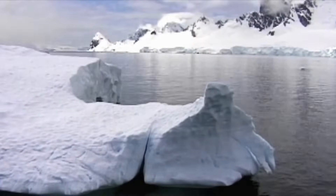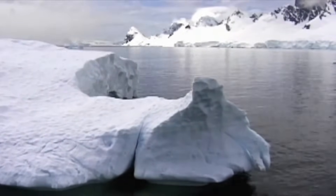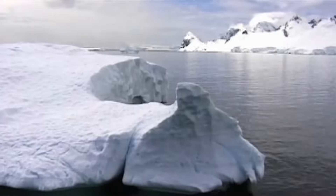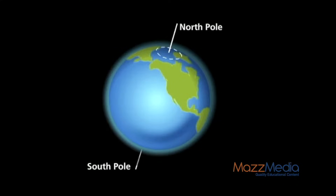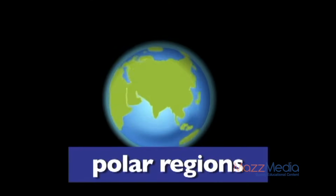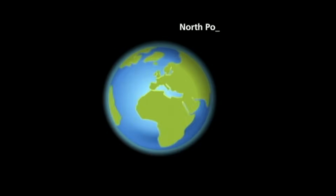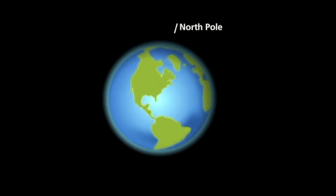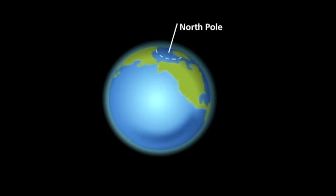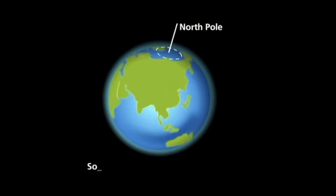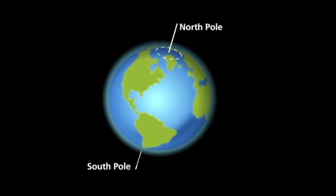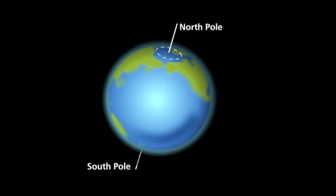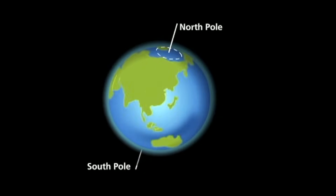The coldest places on Earth are the polar regions. You'll find the poles at either end of the Earth's axis — the imaginary line that goes through the middle of the Earth. The North Pole is at the northern end of the axis, located in the middle of the Arctic Ocean, surrounded by ice and snow, and always frozen. The South Pole is at the southern end of the axis, on land on the continent of Antarctica, always surrounded by snow and ice.